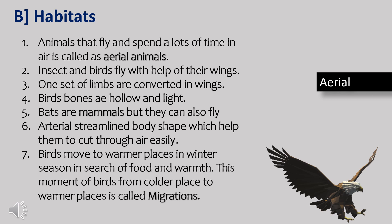Aerial animals are animals that fly and spend a lot of time in the air. Insects and birds — all birds except the flightless birds — fly with the help of their wings. One set of their limbs has been modified as wings. These animals have a lightweight body. Birds have hollow, light bones and strong flight muscles. Bats are mammals but they can also fly. Aerial animals also have a streamlined body shape which helps them to cut through air easily. Birds move to warmer places in the season in search of food and warmth. This mass movement of birds from a cold place to a warmer place is called migration.